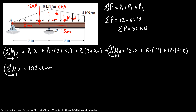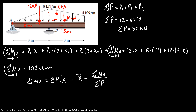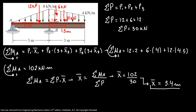Now to find our position x̄, the equation is: the sum of the moments about point A equals the sum of the forces times our distance x̄. So x̄ equals the sum of moments about A divided by the total load P. Our x̄ is equal to 102 divided by 30, so x̄ is equal to 3.4 meters.